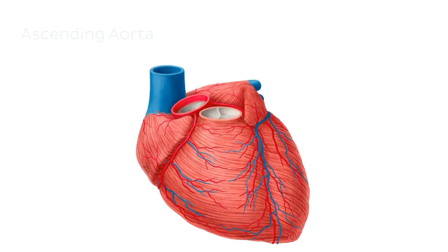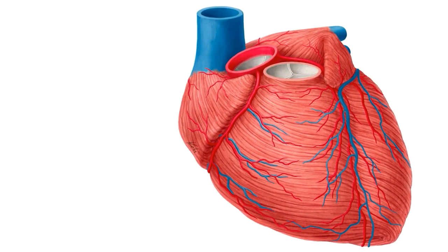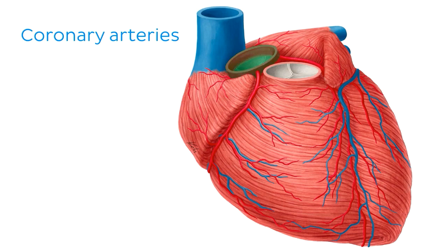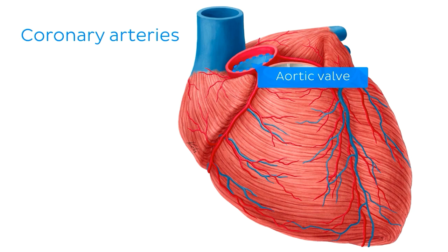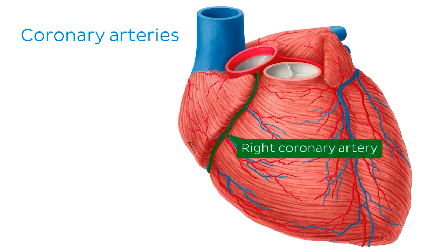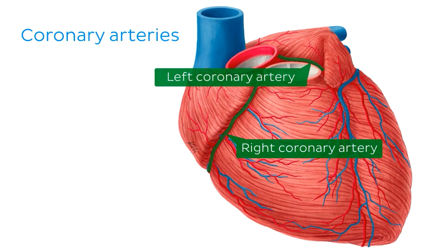Removing the great vessels for a moment, we can now see the initial portion of the ascending aorta, just superior to the aortic valve. From here, two small yet extremely important arteries are given off, and these are known as the right and left coronary arteries.